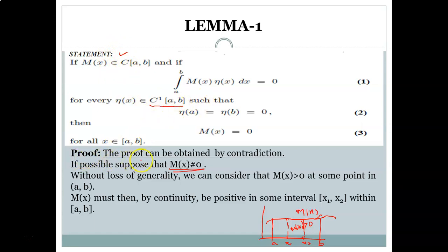The proof of this lemma can be obtained by contradiction. We assume that m(x) is not equal to zero, and by obtaining a contradictory situation we can say that this supposition is wrong and therefore m(x) must equal zero. This is the methodology of the proof.